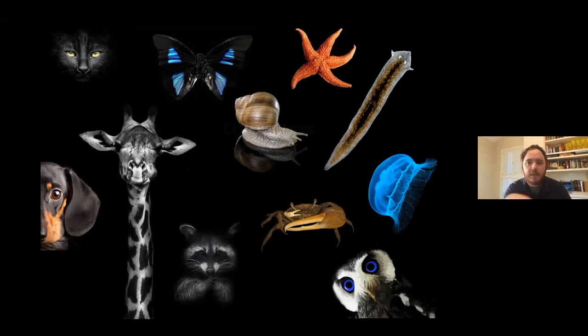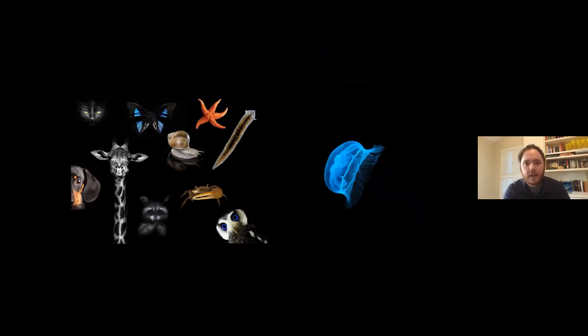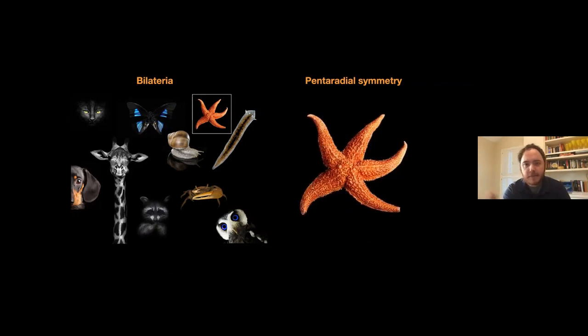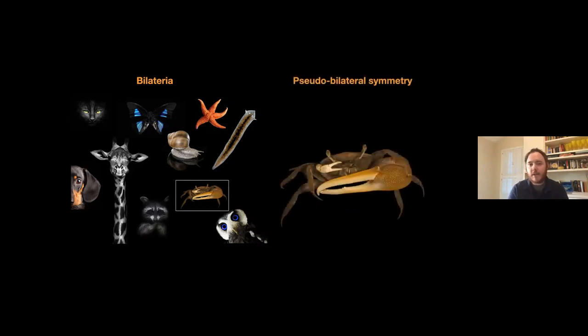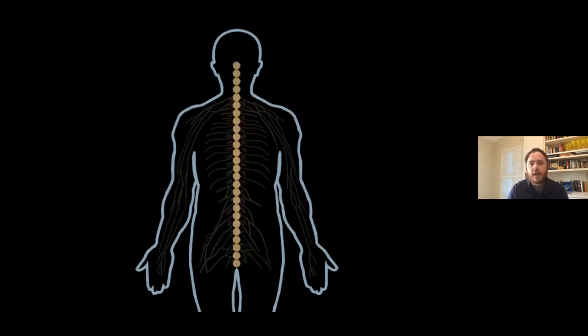We're especially fascinated by the asymmetries and symmetries displayed by animal bodies. The vast majority of animals are bilaterally symmetric—they have a left and a right side. Some are radially symmetric, but most are based on a bilateral body plan. Some have striking asymmetries across left and right, like this crab, but most like us are largely symmetric externally between left and right.